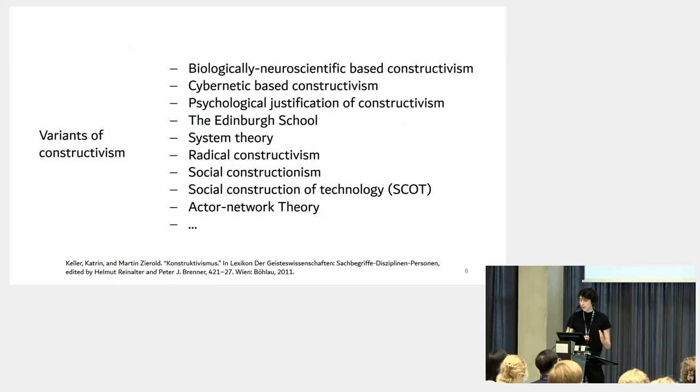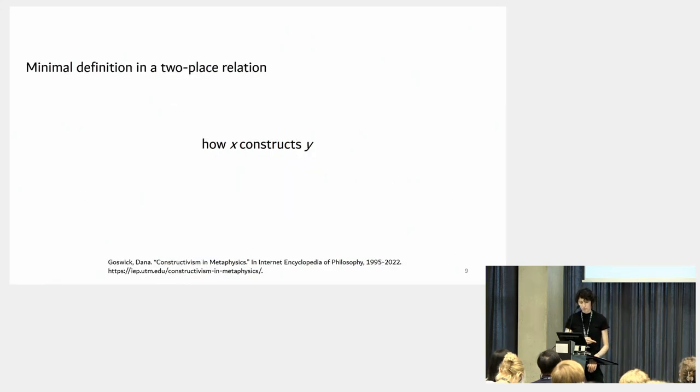Nevertheless, it is important to acknowledge that various forms of constructivism exhibit significant variations in ontological and epistemological stances. What could a minimal definition of constructivism look like? Here I got one from Dana Goschlik. I think the minimal definition in a two-place relation would be how X constructs Y.